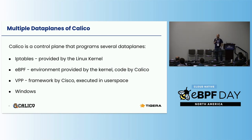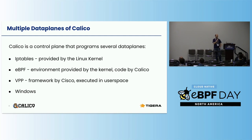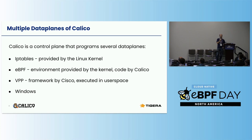Calico is essentially a multi-platform project. It supports multiple data planes — it naturally runs on iptables, it supports the eBPF data plane which I'm going to talk about today, but also there are other data planes like the VPP contributed by Cisco. Calico also runs on Windows, and we can also leverage some eBPF on Windows.